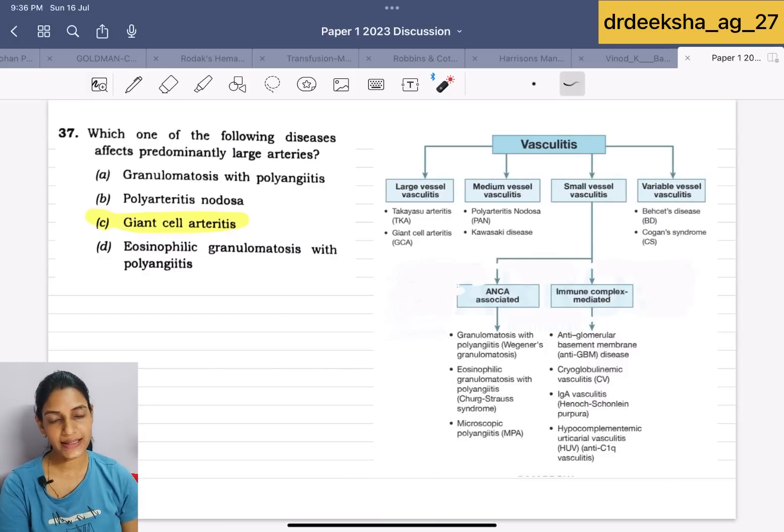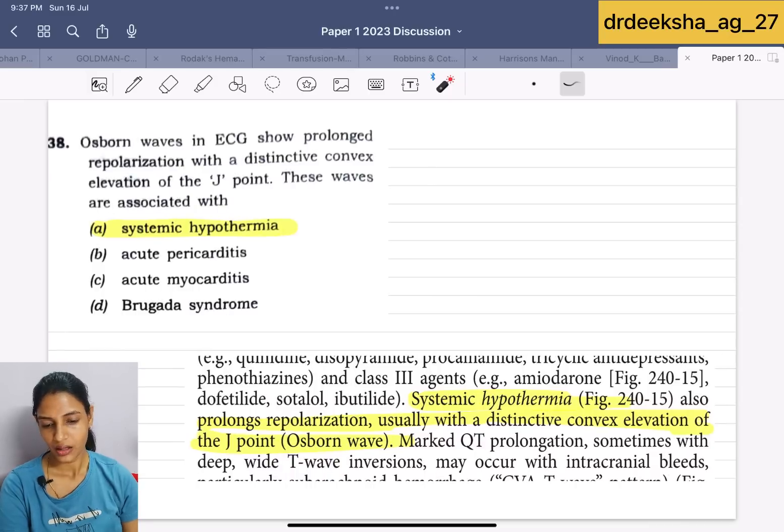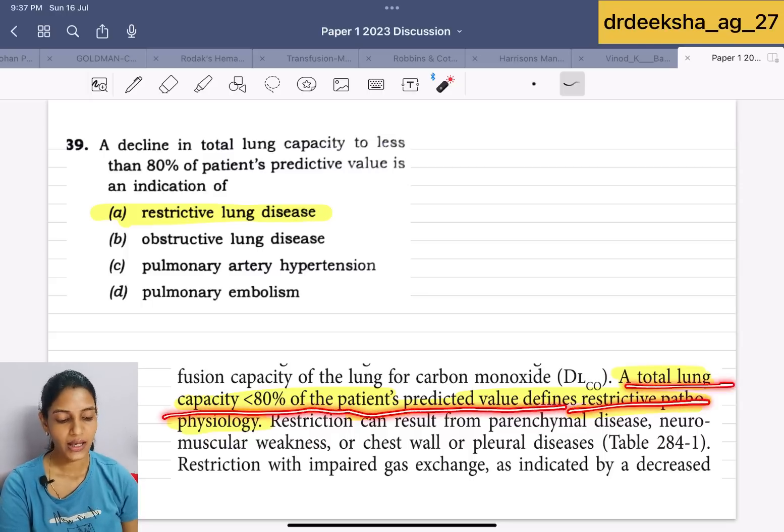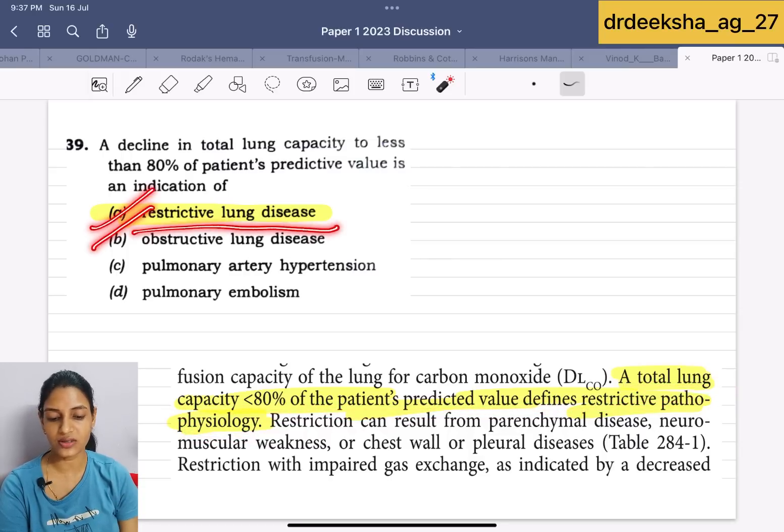Next is which of the following disease affect predominantly large arteries? If we talk about vasculitis, large vessel vasculitis are Takayasu and giant cell. The answer for this is giant cell arteritis. Osborne wave in ECG show prolonged repolarization with distinctive convex elevation of J point. We all know Osborne wave associated with systemic hypothermia. A decline in total lung capacity to less than 80 percent of patient predictive values is an indication of... a total lung capacity less than 80 percent of the patient predictive value defines the restrictive physiology. Answer is restrictive lung disease.